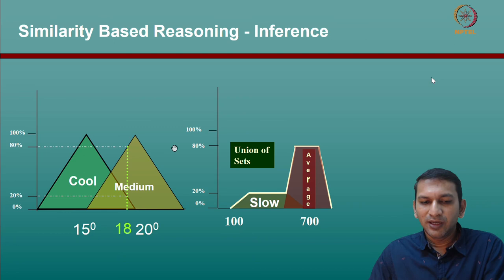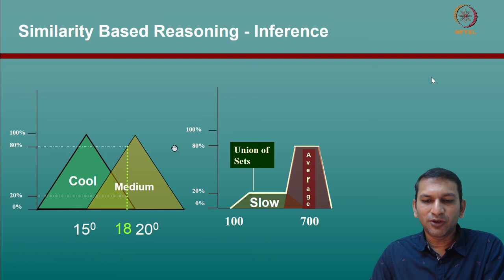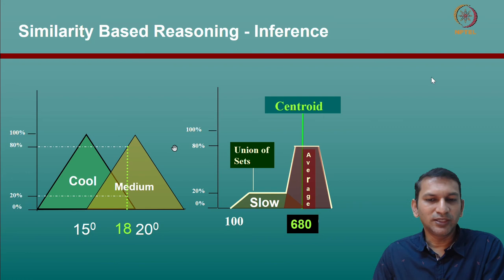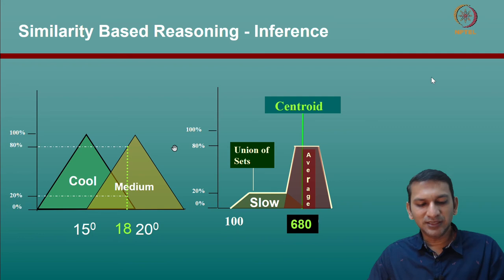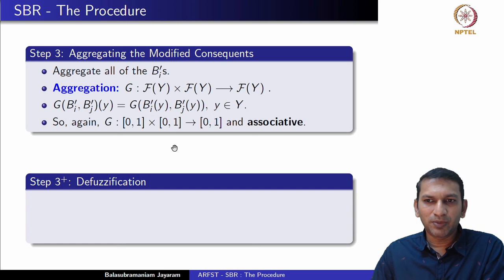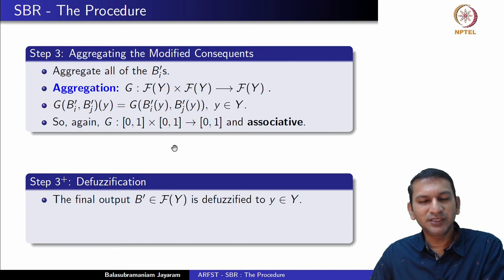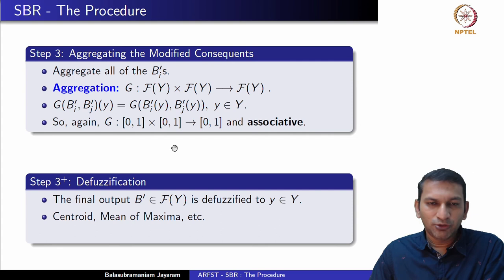For the 18-degree temperature sensed by the control system, we want to set the motor speed to a particular RPM — a number, not a fuzzy set. So we applied the centroid operation to the aggregated fuzzy set to obtain a value in Y. This operation is called defuzzification: taking the final output B', a fuzzy set on Y, and defuzzifying it to a single value in Y. Centroid is one particular defuzzification method; there are many more which will be covered in the next few lectures.